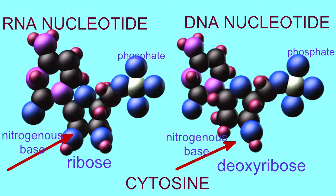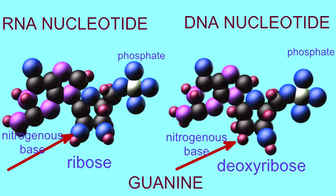RNA and DNA cytosine nucleotides share the same nitrogenous base cytosine. However, they differ in their pentose sugar, with the RNA nucleotide possessing ribose with its oxygen on the number 2 carbon, and the DNA nucleotide lacking this oxygen on the number 2 carbon.